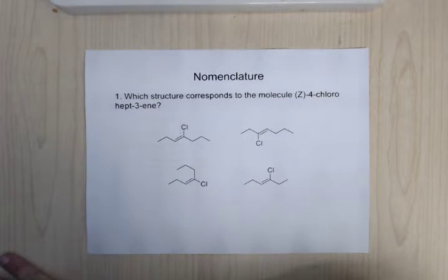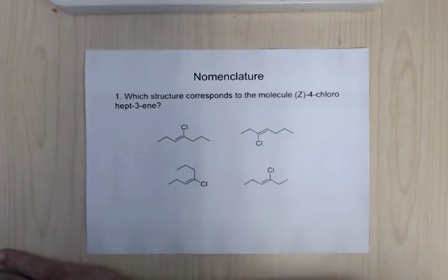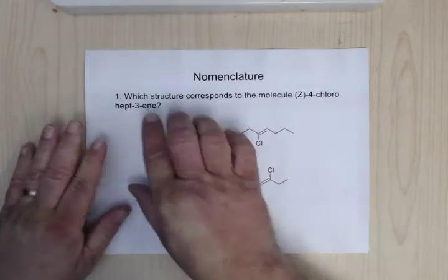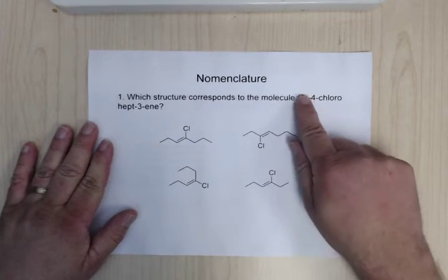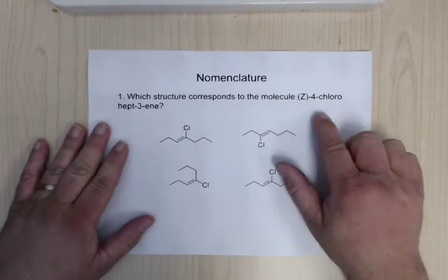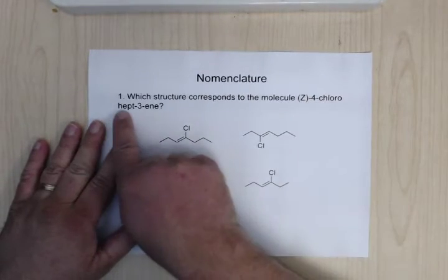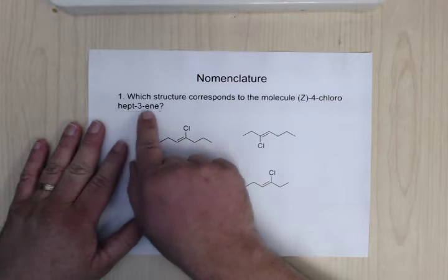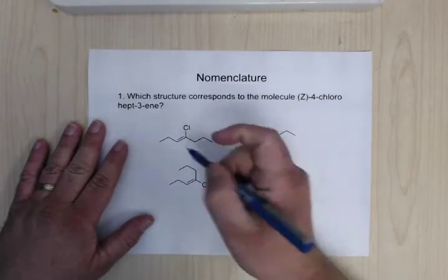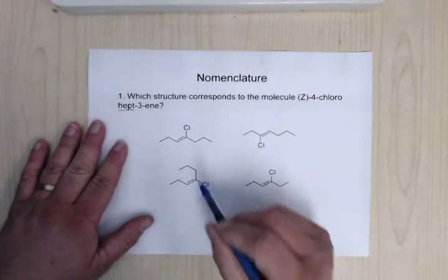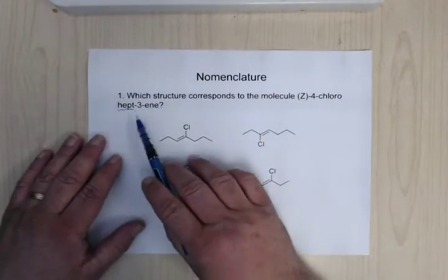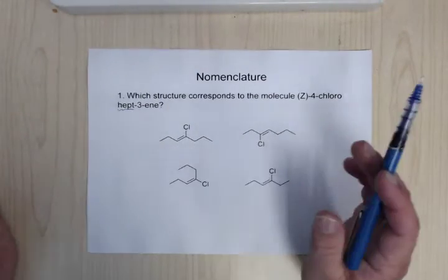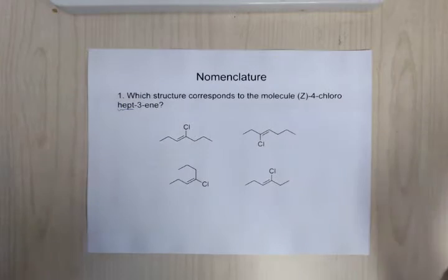First up is nomenclature. When you're given a name and have to draw the structure, the first thing you want to do is don't focus on the E and Z. Just focus on the 4-chlorohept-3-ene part. So the first thing to do is always look at the main chain — that might be able to knock some answers out before you do anything else.